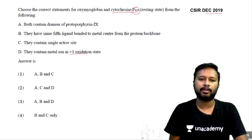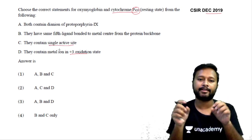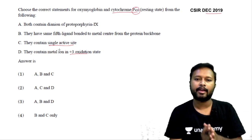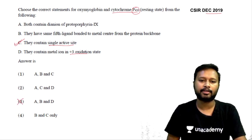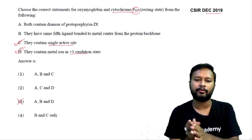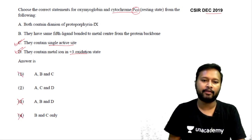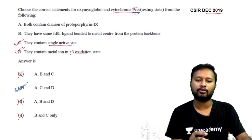For the CSIR December 2019 question on oxy-myoglobin and cytochrome P450: both have a single active site (not two), so statement c is correct — cancel option 3. Both contain metal in +3 oxidation state, so d is correct — cancel options without d. The statement that is not true for both is statement b, making option 2 the correct choice.